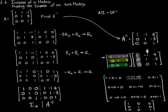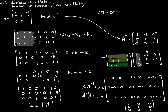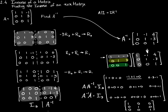By all rights, A times A inverse has given me I sub 3. One should also check that A inverse times A equals I sub 3 to be absolutely sure. The point of the video is that starting with matrix A, concatenating it with the appropriately-sized identity matrix, and using elementary row operations to convert the left-hand side to the identity matrix results in A inverse on the right-hand side.